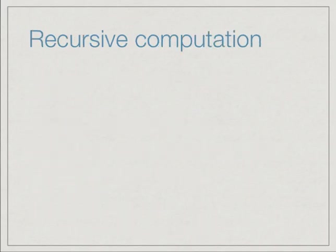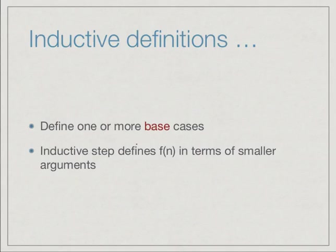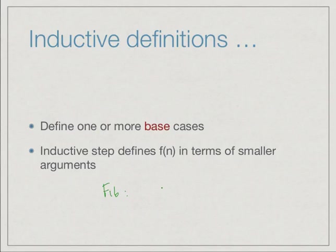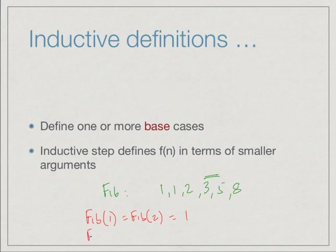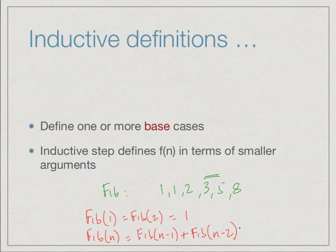In both these cases we have a base case — like 0 factorial or m times 1 — where the value is given explicitly, and then an inductive step where f(n) is defined in terms of f(n-1). In general it can be defined in terms of even smaller arguments. One example is the Fibonacci series: 1, 1, 2, 3, 5, ... where fibonacci(n) = fibonacci(n-1) + fibonacci(n-2). So a recursive definition can express the value for n in terms of one or more smaller inputs.